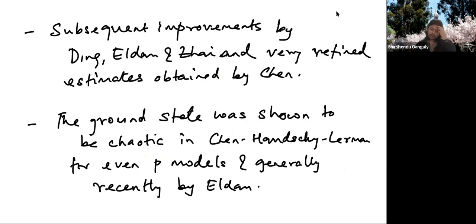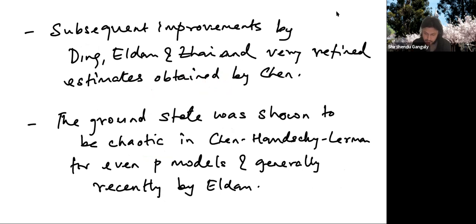Subsequently there have been many improvements. There was a paper by Ding, Eldan, and Zhai who proved an improved estimate on the number of near-peaks in the spin glass landscape, and then very refined estimates were obtained by Belius and Kistler later. Then the ground state, which was not quite analyzed in Chatterjee's work, was also shown to be chaotic in a paper of Chen, Handschy, and Lerman for even p-models, and then completely generally by a very recent result.